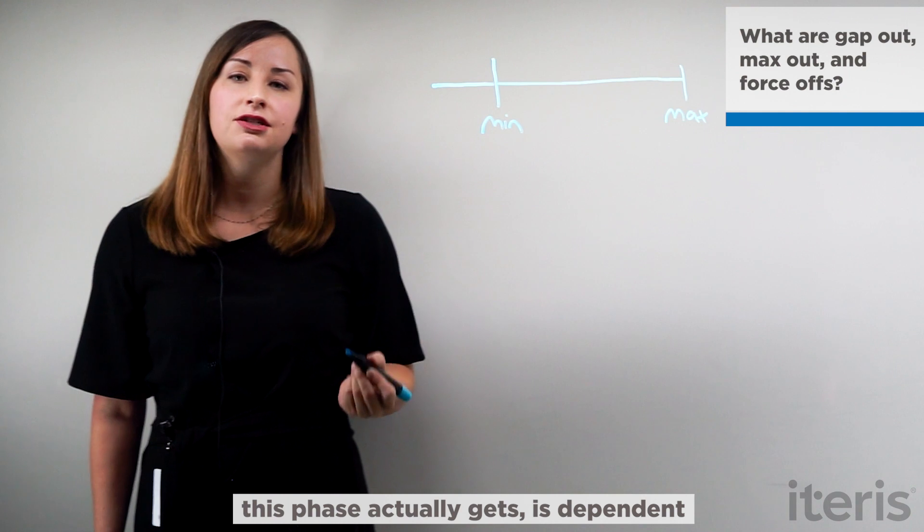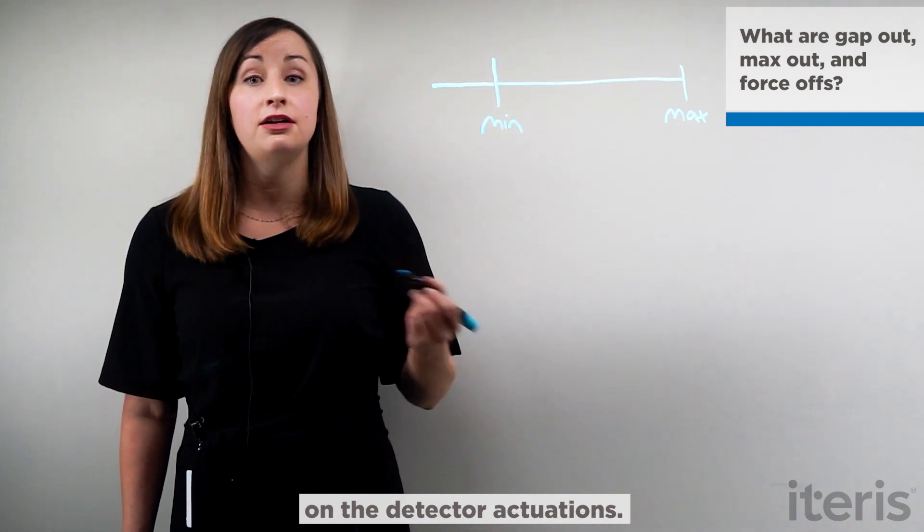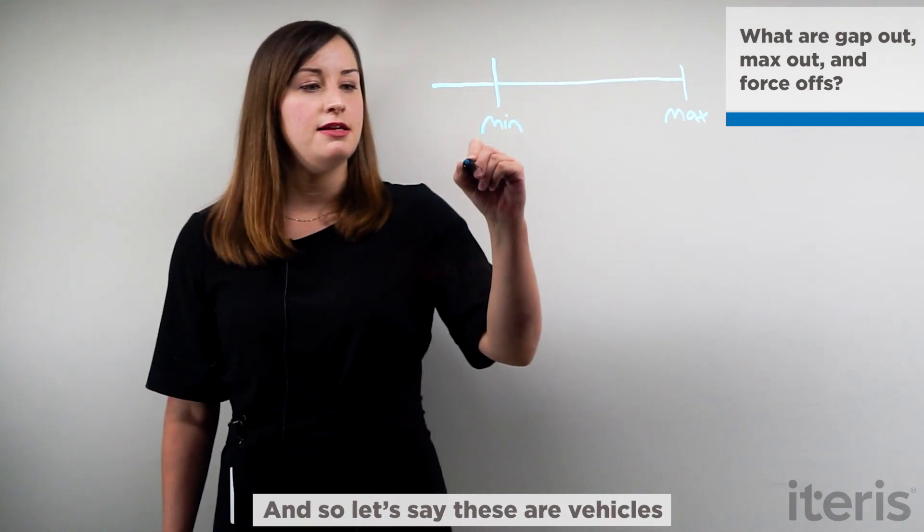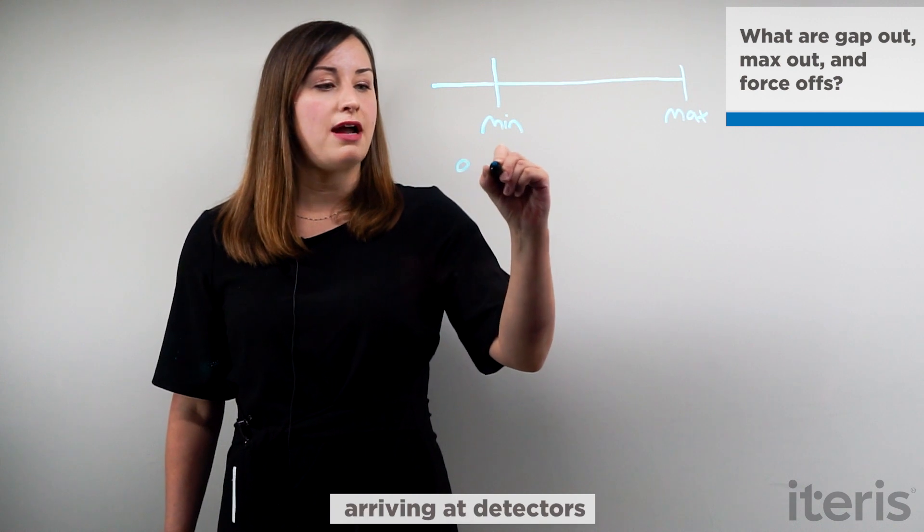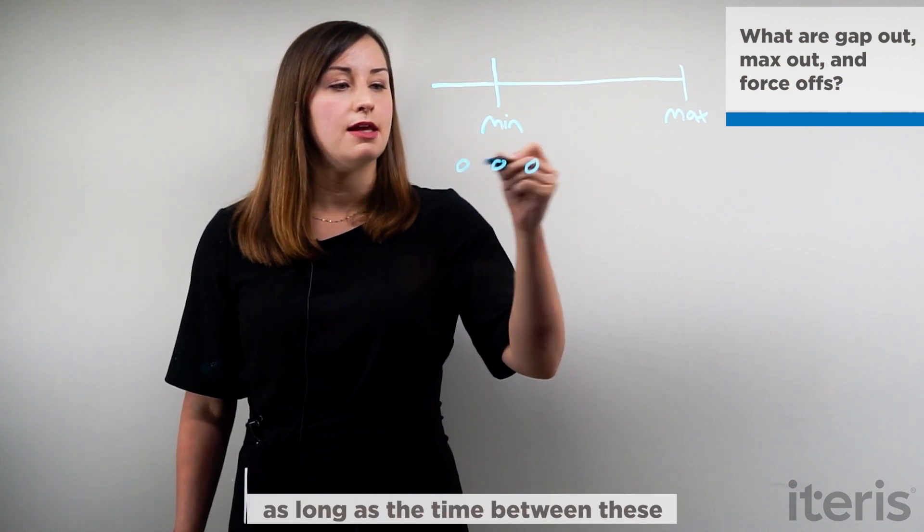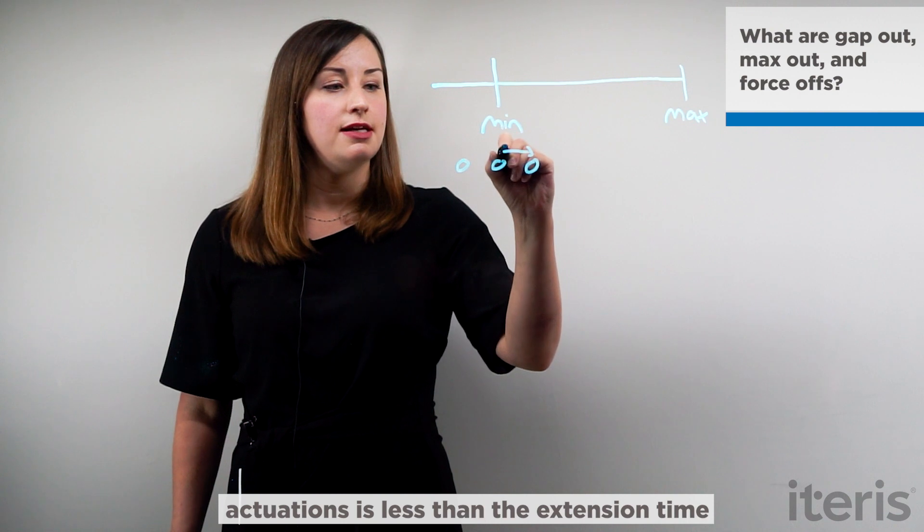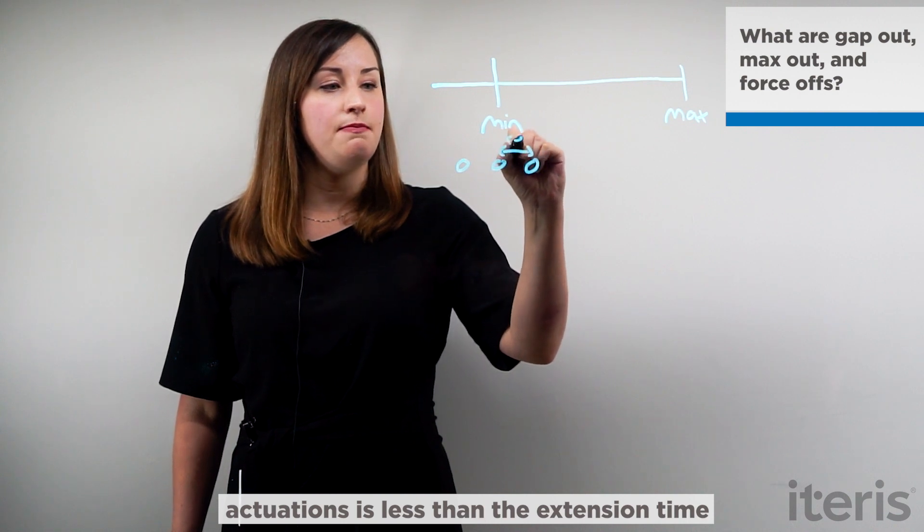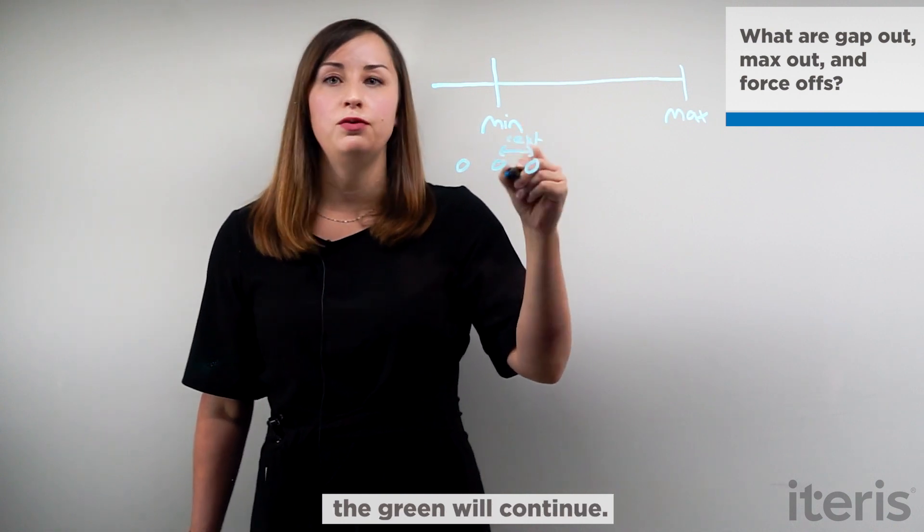Now the amount of green time that this phase actually gets is dependent on the detector actuations. And so let's say these are vehicles arriving at our detectors. As long as the time between these actuations is less than the extension time, the green will continue.